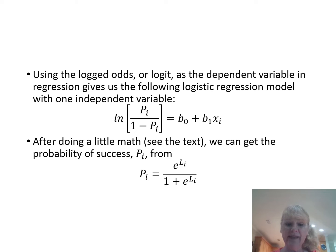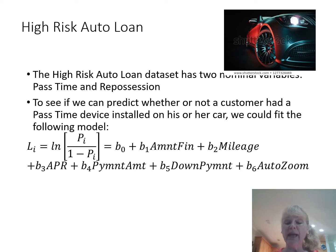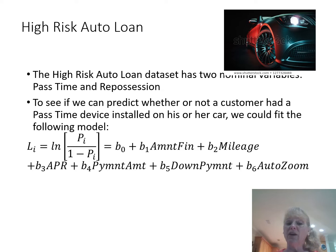This is the math behind that, and JMP will do the conversion. One of our first examples in the book is a high-risk auto loan. We're trying to figure out if a person needs a pastime device on their car. This device will then locate the car if somebody defaults on their loan. We're looking at these different predictors for that nominal variable — yes or no, they need a pastime device. Those variables are: how much was financed, the number of miles on the car, the APR, the interest rate, the payment amount per month, the down payment they made, and an auto-zoom variable.